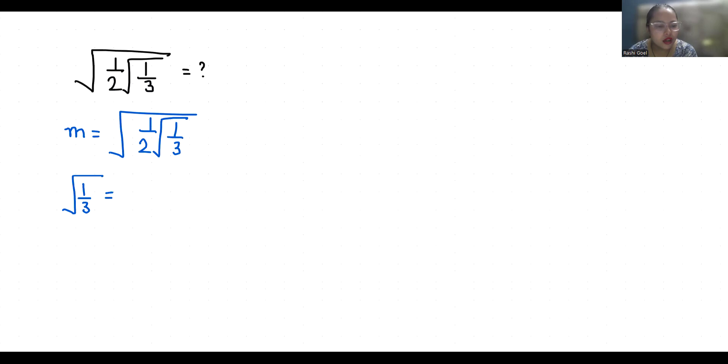If I multiply by root 3 numerator and denominator, it becomes root 3 by root 3 square, which is equals to root 3 by 3. So I'm going to replace it, so m is equals to under root 1 by 2 times under root 3 by 3.